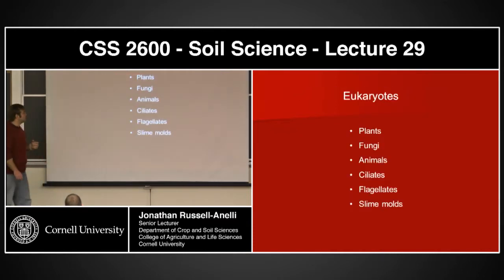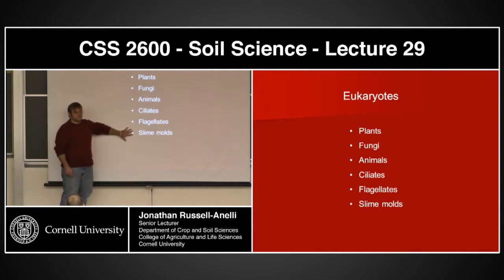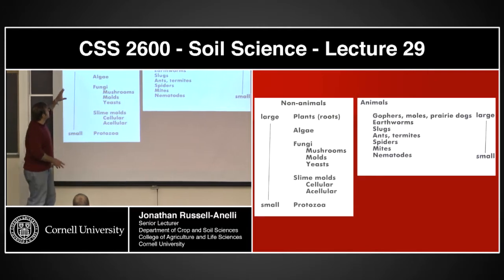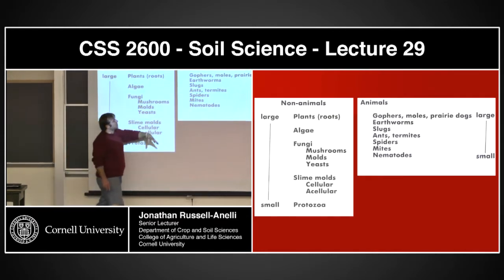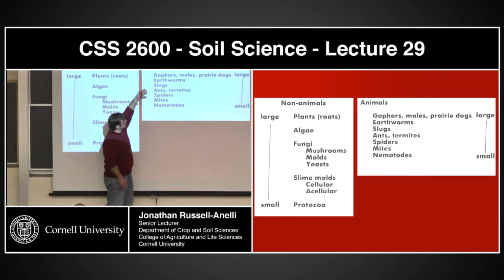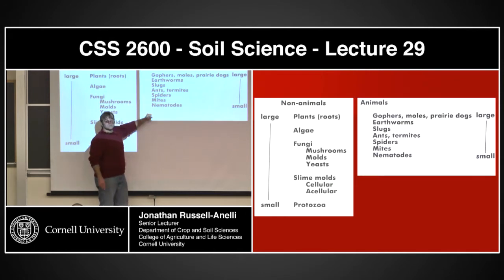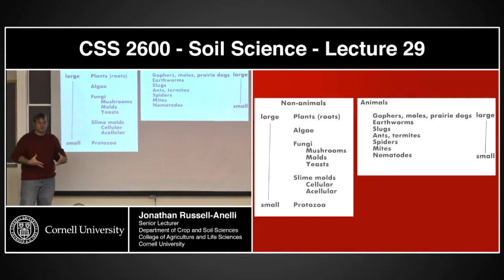Eukaryotes are a large group. They include plants, fungi, animals, ciliates, flagellates, and slime molds. We often have a hard time realizing we're related to slime molds. When we talk about this, we often think of the non-animal groups: plants from large to small, algae, fungi, slime molds, and some protozoa. For animals, we're talking about soil organisms — gophers, moles, prairie dogs, earthworms, slugs, all the way down to nematodes.